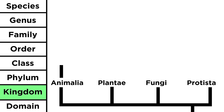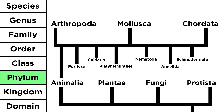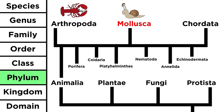Within each kingdom there are several phyla. Within the animal kingdom there are nine major ones. There is the phylum arthropoda, which contains all kinds of bugs and lobsters and creepy crawlies; mollusca, which contains octopi and snails and other such things; and most notably there is chordata. This phylum includes any animal with a spinal cord, and the divergence of vertebrates and invertebrates was a major step in evolution.